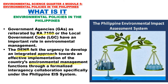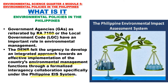The DENR developed an integrated approach towards effective implementation of environmental management functions through formalized interagency collaboration under the Philippine EIS system. A memorandum of agreement with 29 government agencies was made to incorporate environmental aspects and conditions of the Environmental Compliance Certificate into their decision-making processes, requiring issuance of an ECC prior to the release of permits, licenses, and resolutions. Revisions were made to enhance effectiveness and efficiency of the PEISS, integrating new EMB-DENR policies to promote EIA as a planning and decision-making tool, and stating that EIA findings may be used in giving permits, clearances, licenses, endorsements, resolutions, and other government approvals.